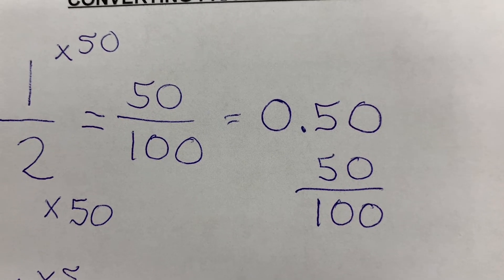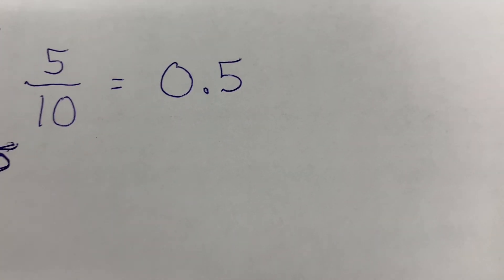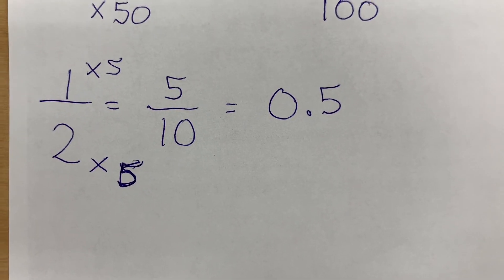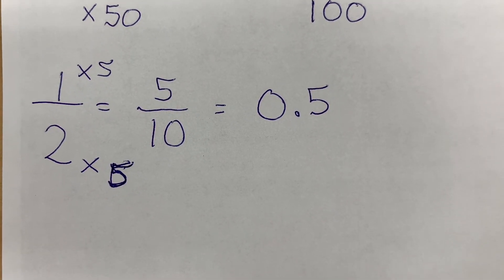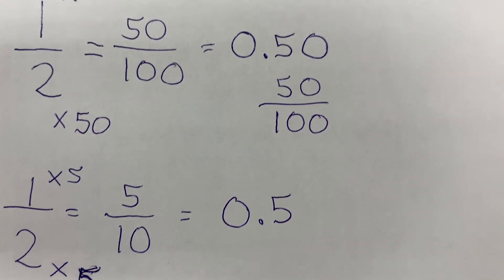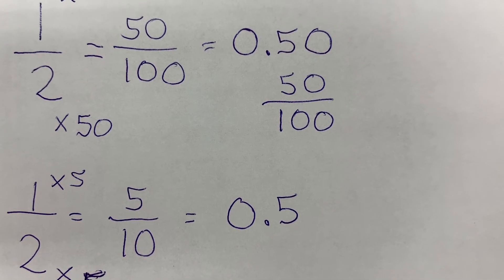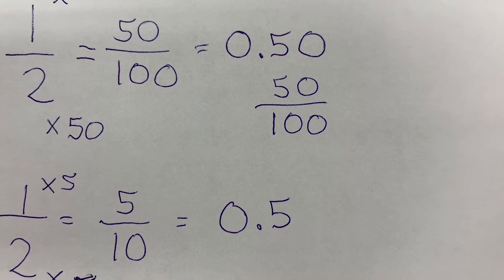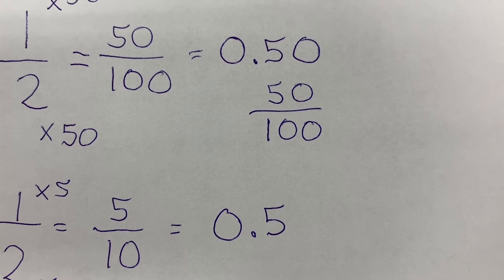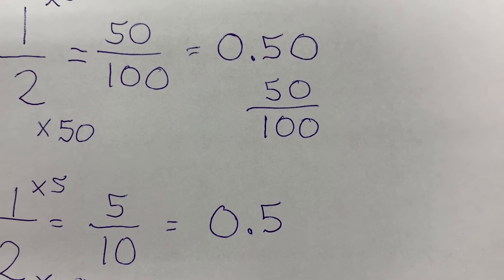Do you see how that works? And look at our other number — we multiplied by 5 and got 5 tenths, so 0.5. And 0.50 on top — remember, there are infinite zeros behind any number; we only put them there if we need to use them.